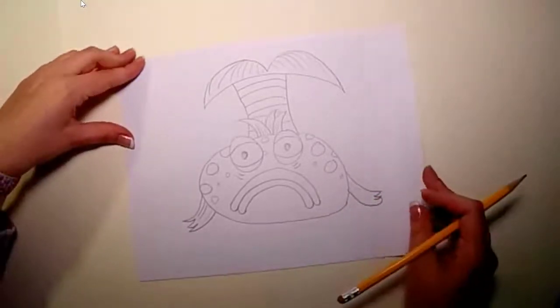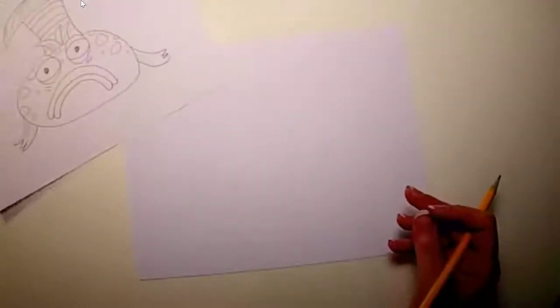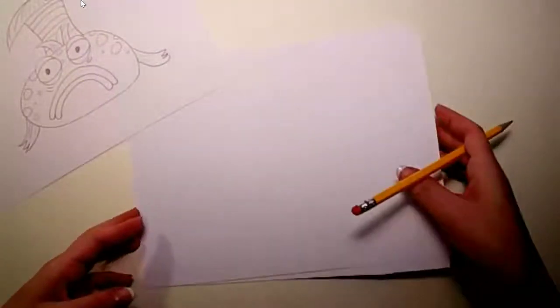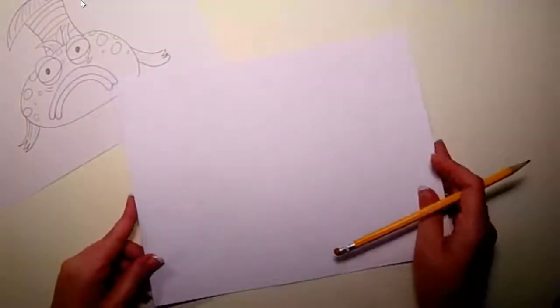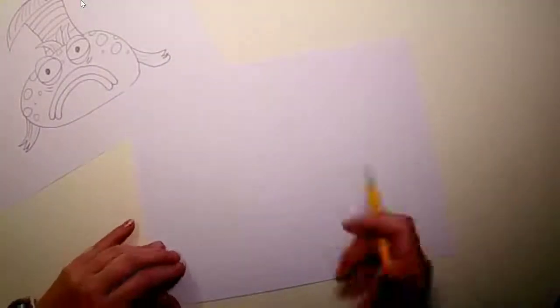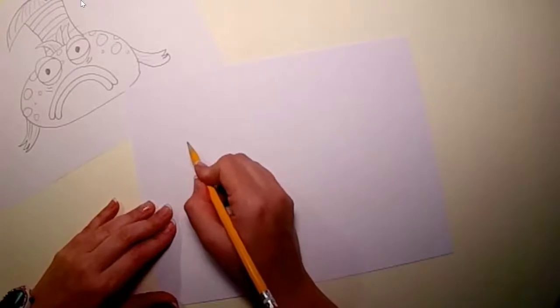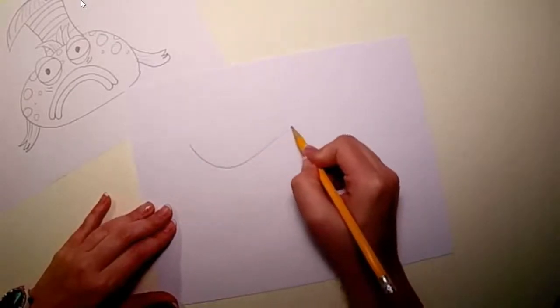Now if you'd rather draw Kiss Kiss Fish, you're going to want to follow these directions. When we look at Kiss Kiss Fish, we're going to draw him from the side. So instead of using an oval, we are going to use a sort of teardrop shape for his body.